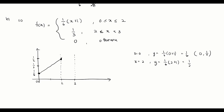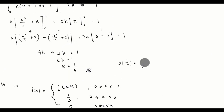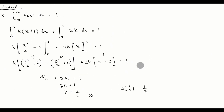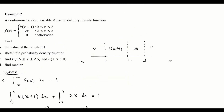For the interval between 2 and 3, the function is the constant 1/3, which is a horizontal line at y = 1/3. Otherwise the function is 0. We label the axes x and f(x) to complete the sketch of the PDF.